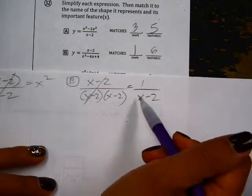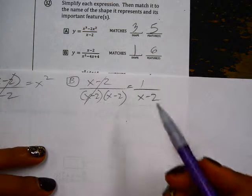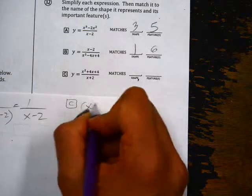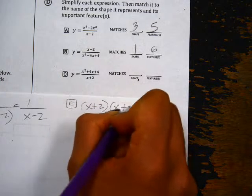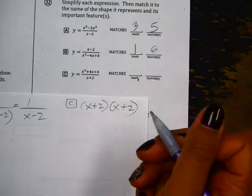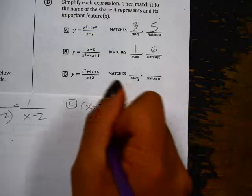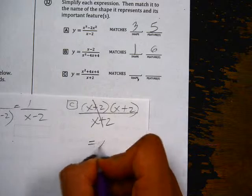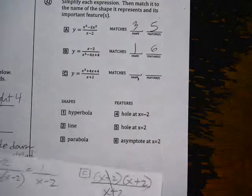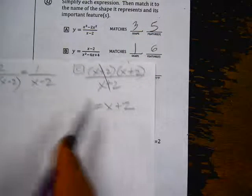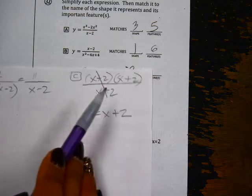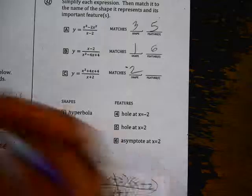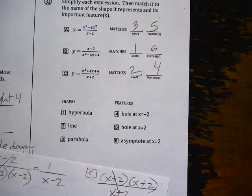On part C, if we factor the numerator, it would be x plus 2, x plus 2. That leaves us with a line, graph number 2. The line has a hole at negative 2 because of the x plus 2 in the denominator, so that would be feature number 4.